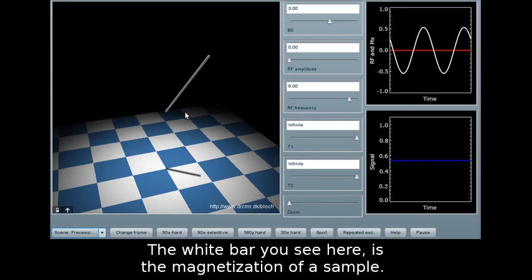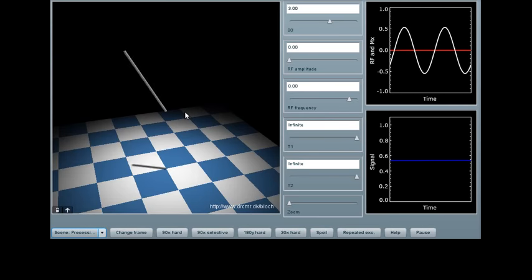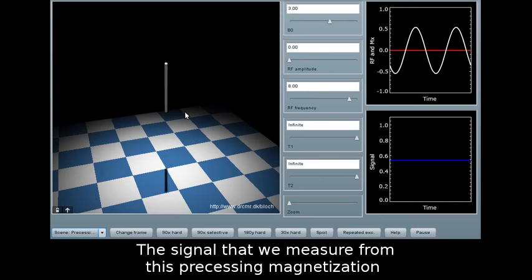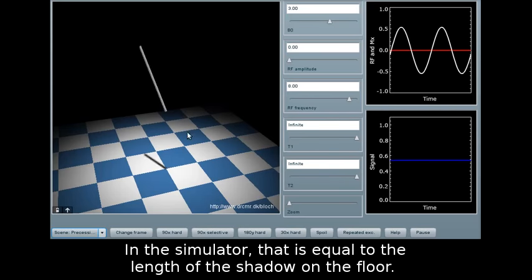The white bar you see here is the magnetization of a sample. You see how it precesses in a vertical magnetic field B0. The signal that we measure from this precessing magnetization is proportional to the size of the transversal magnetization. In the simulator that is equal to the length of the shadow on the floor.